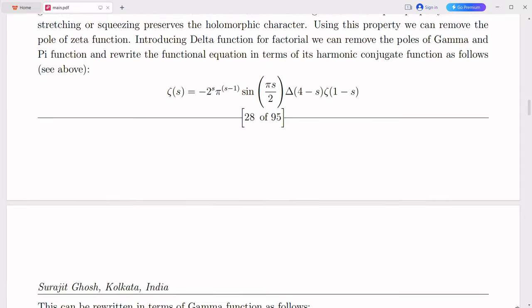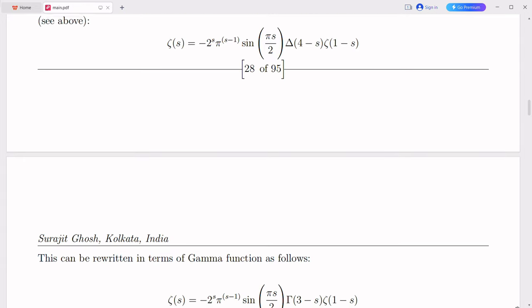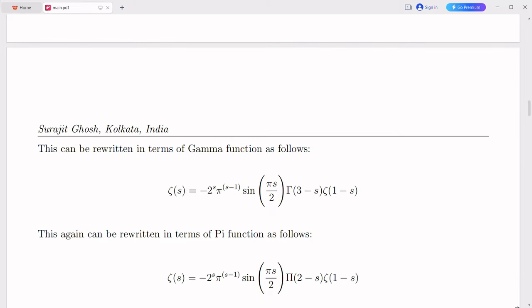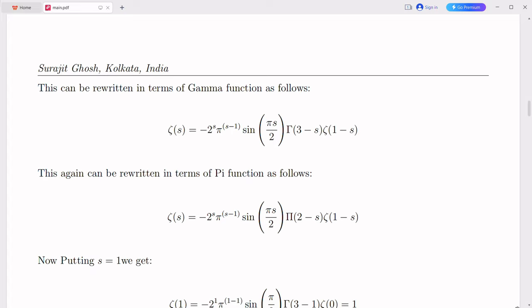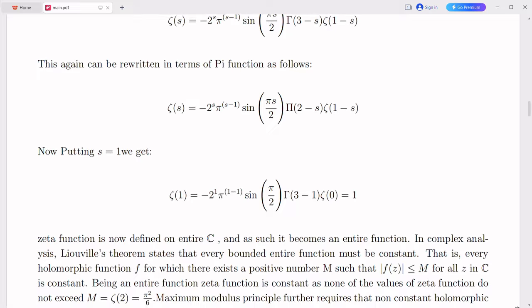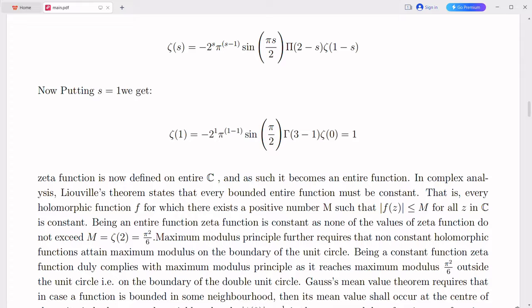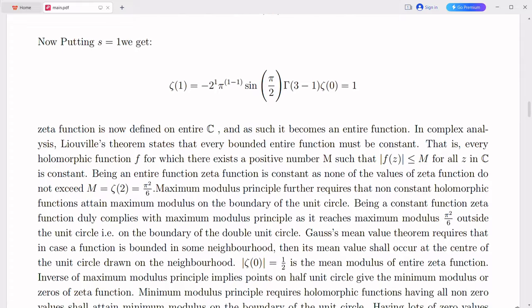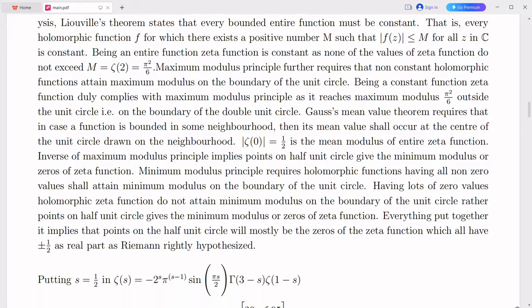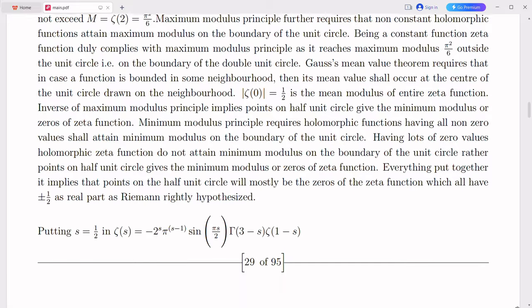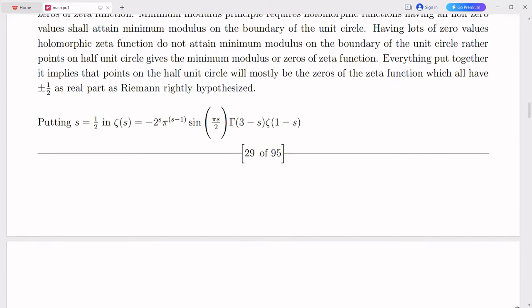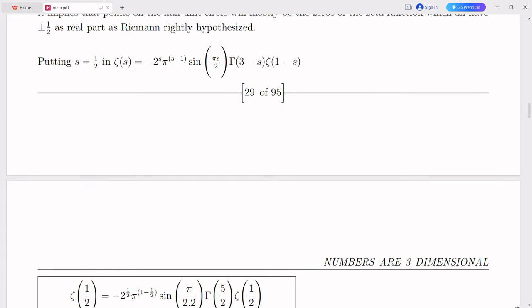Quantum computers rely on the principles of quantum mechanics and utilize quantum bits or qubits to perform computations. The mathematics associated with quantum computing involves complex linear algebra and quantum algorithms. Complex numbers are integral to representing quantum states, quantum gates, and quantum operations. If imaginary numbers were brought down to the real number line, it would impact the mathematical foundations of quantum computing. The use of complex numbers would remain essential for representing and manipulating quantum states, as well as performing quantum operations and simulations. Extending the real number line might lead to the development of new mathematical techniques and algorithms for quantum computations, enhancing the efficiency and capabilities of quantum computers. Moreover, the integration of imaginary numbers with the real number line could have implications for quantum error correction codes, which protect quantum information from decoherence and errors. The mathematical framework underlying error correction codes would likely continue to rely on complex numbers, ensuring the reliable storage and manipulation of quantum information.